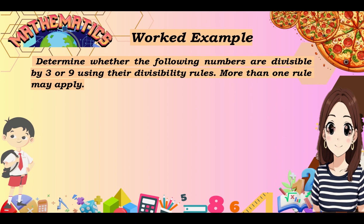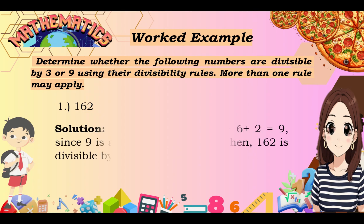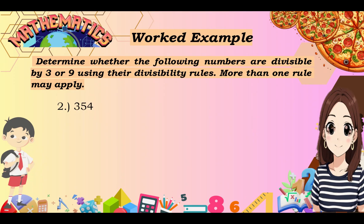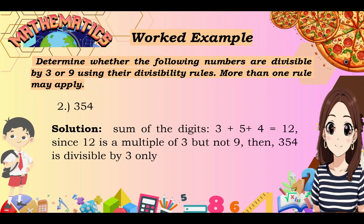Now for our next example: determine whether the following numbers are divisible by 3 or 9 using their divisibility rules — more than one rule may apply. Number 1: 162. The sum of the digits is 1 plus 6 plus 2 equals 9. Since 9 is a multiple of both 3 and 9, then 162 is divisible by both 3 and 9, meaning both numbers can divide 162. Number 2: 354. The sum of the digits is 3 plus 5 plus 4 equals 12. Since 12 is a multiple of 3 but not 9, then 354 is divisible by 3 only.